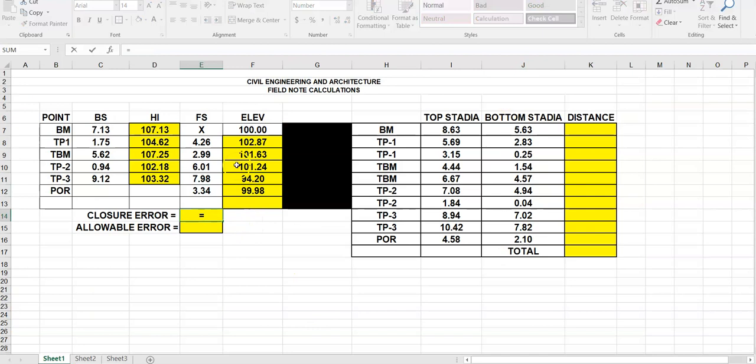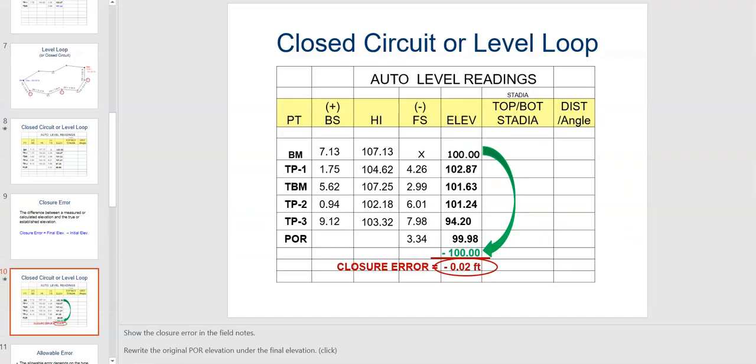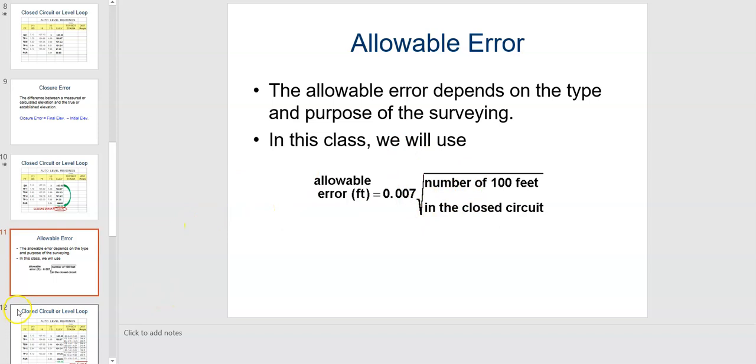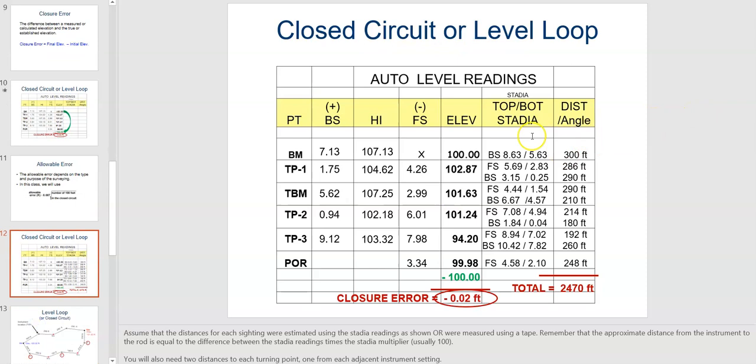For closure error we're going to say the final elevation minus the initial elevation to find how close we came back around. We hit equals, tap on 100, say minus 99.98, hit enter, and get 0.02 — that's our closure error. To find the allowable amount of error we have to do some other math. We need to find the total feet traveled in that closed circuit, and over here on the right we have our top stadia and bottom stadia readings.